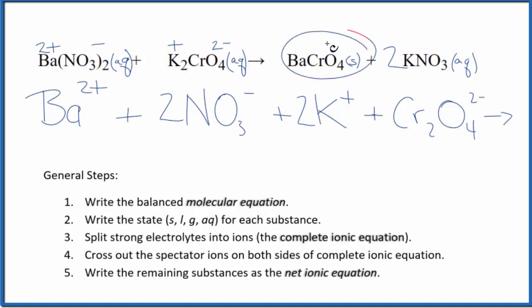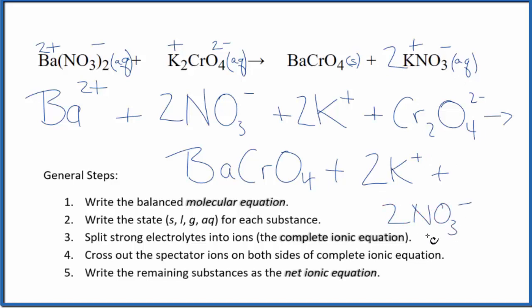For the products, we don't split solids apart. So we just have this barium chromate, potassium, and then the nitrate. So we have 2 potassium ions, just like in the reactants, plus we have 2 nitrate ions. Let's put them down here. And these are the products for our complete ionic equation.